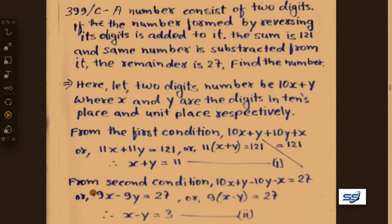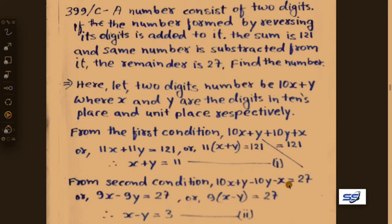From the second condition: 10x plus y minus 10y minus x equals 27. Simplifying: 9x minus 9y equals 27. Taking 9 as common and dividing: x minus y equals 3. Let this be equation 2.